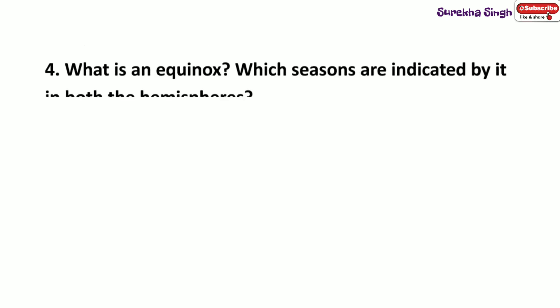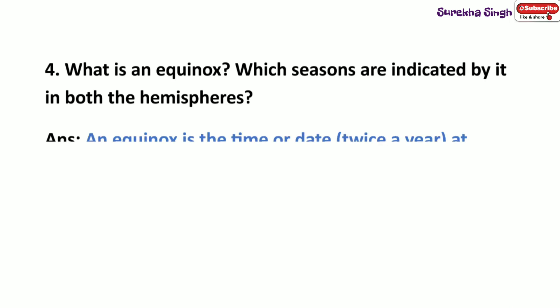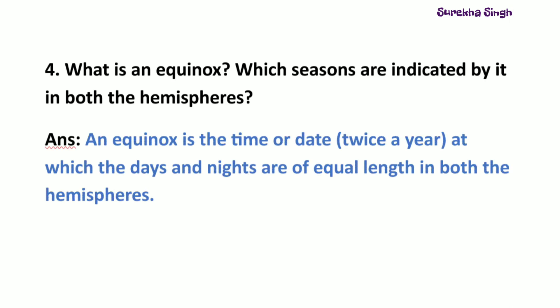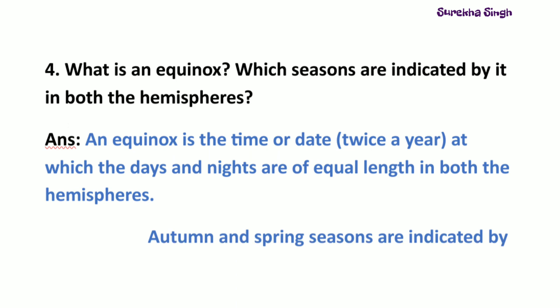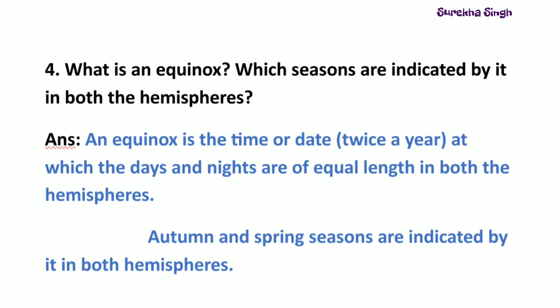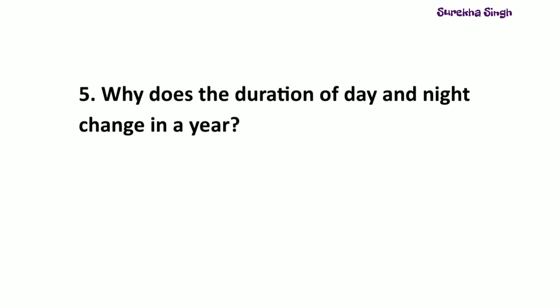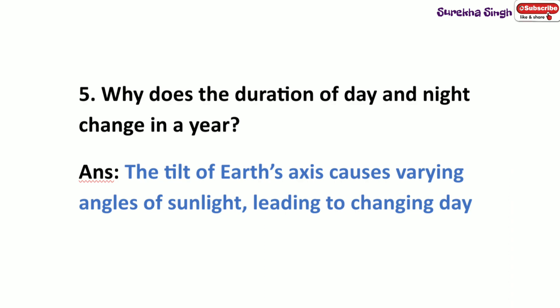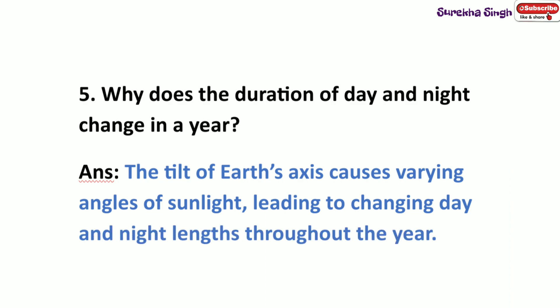Question 4: What is an equinox? Which seasons are indicated by it in both the hemispheres? An equinox is the time or date twice a year at which the days and nights are of equal length in both the hemispheres. Autumn and spring seasons are indicated by it in both hemispheres. Question 5: Why does the duration of day and night change in a year? The tilt of earth's axis causes varying angles of sunlight, leading to changing day and night lengths throughout the year.